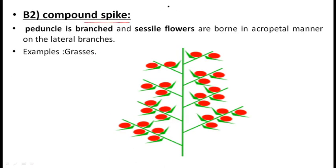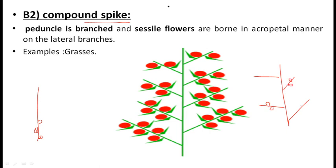Second type of compound racemose is compound spike. In simple spike, the peduncle was elongated with sessile flowers directly on it. In compound spike, the peduncle is branched first, and then the branches bear sessile flowers — no stalks on the flowers. The arrangement of flowers is again acropetal — younger towards the apex and older towards the base. You will find this inflorescence in grasses.